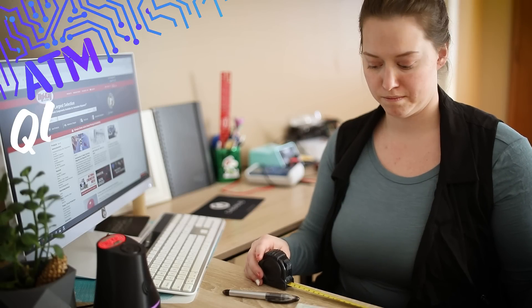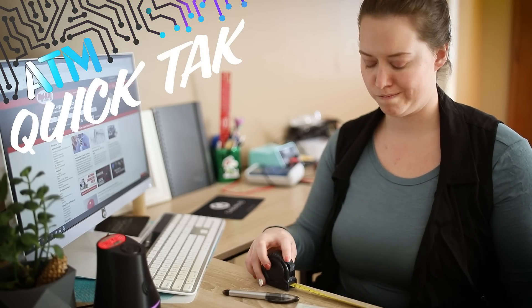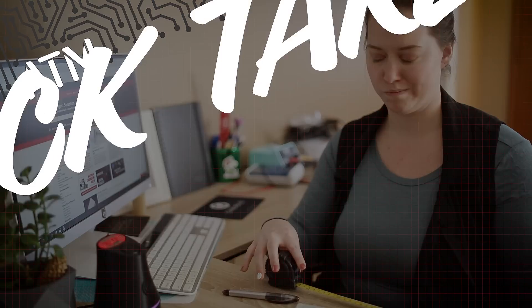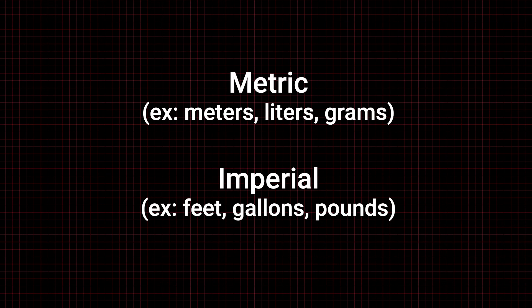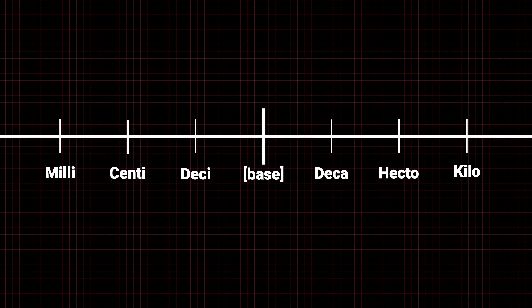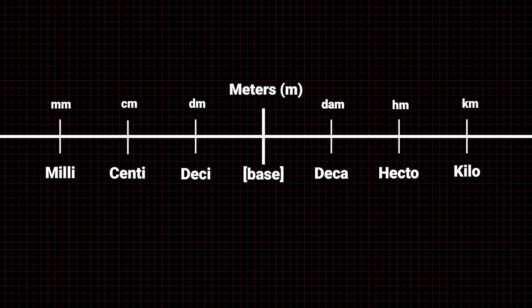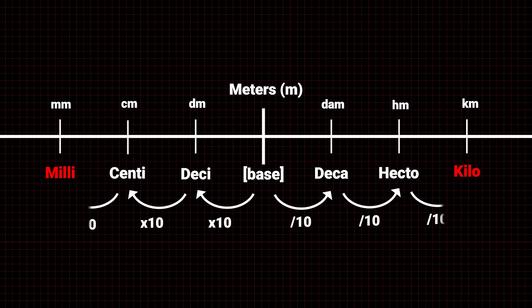Taking some measurements and need to convert your units? There are two main systems of measurement: metric and imperial. The metric system makes conversions easy. Let's take meters as an example. To convert anywhere between millimeters and kilometers, simply divide or multiply by 10 for each step you go up or down.